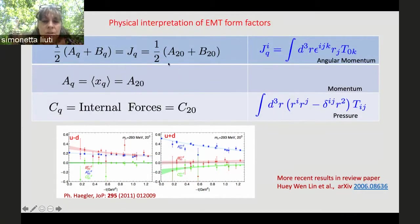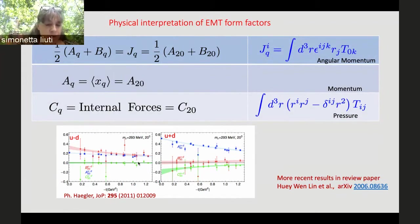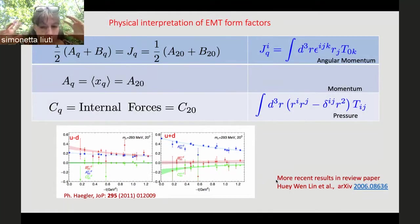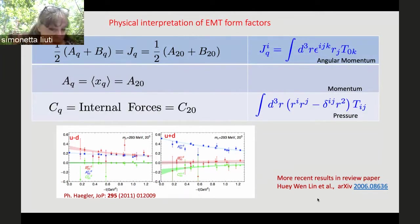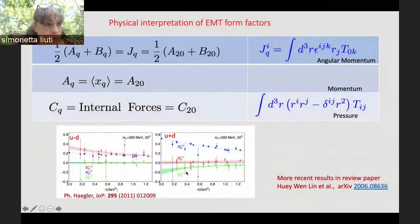How do we interpret the energy momentum form factors? The A and B form factors give us angular momentum via the Ji sum rule. A(0) alone gives momentum, and C(0) gives us the pressure. These were calculated in a flavor-separated way — isoscalar and isovector components for up and down quarks inside the proton. There have been more results since then; you can look at a recent review paper just posted for more up-to-date evaluations.